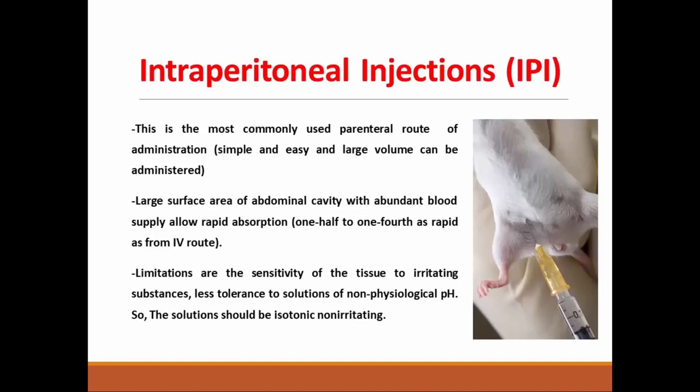There are some limitations when using this route. The tissue is sensitive to irritating substances, and there is less tolerance to solutions with non-physiological pH. For example, if you inject a substance with acidic pH like imipramine hydrochloride, this will cause irritation and inflammation in the peritoneum at the site of injection. You should consider further dilution or use another route like intravenous or oral.